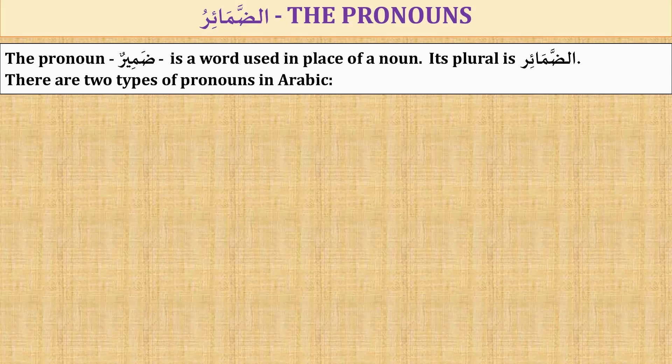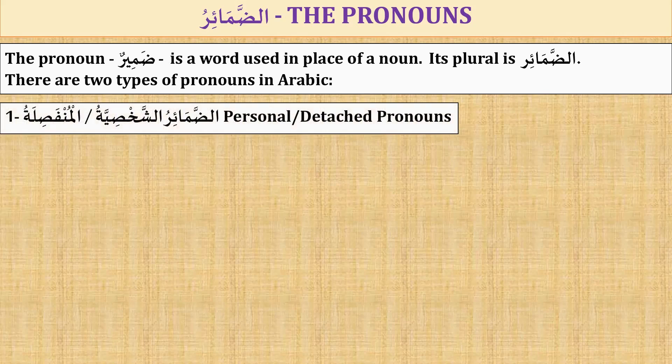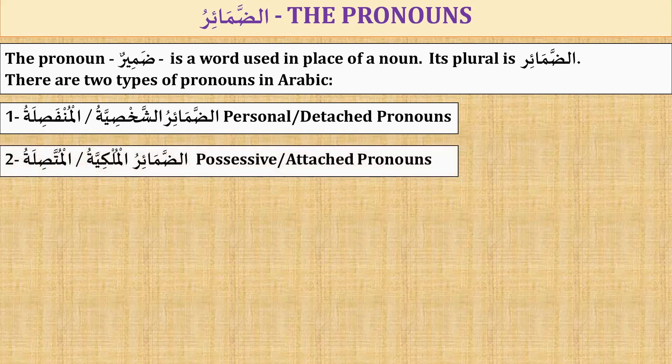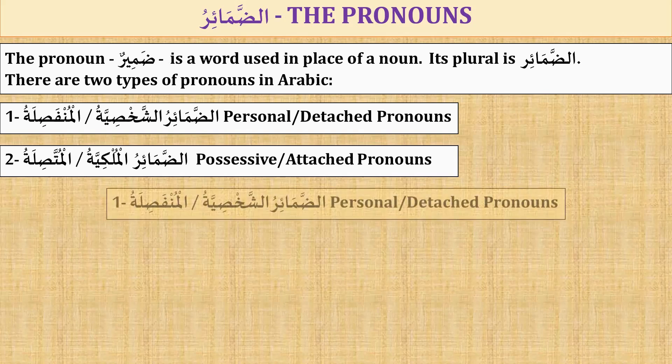There are two types of pronouns in Arabic. The first one is al-zamair al-shakhsiyyah or al-munfasilah. The second one is al-zamair al-mulkiyyah or al-mutasilah, possessive or attached pronouns. I will only explain the first one in this lesson inshallah — al-zamair al-shakhsiyyah or al-munfasilah, personal or detached pronouns.